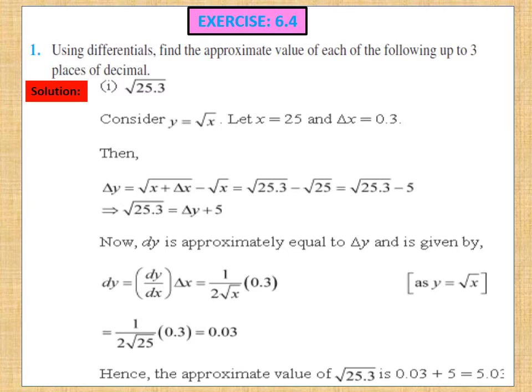Since it is the case of square root, consider y = √x. We know √25 = 5, so taking x = 25 and the small change delta x = 0.3 (since x increases by 0.3 to give 25.3). By definition, delta y = √(x + delta x) − √x = √25.3 − √25. After transposition, √25.3 = delta y + 5. We need to find the value of delta y.